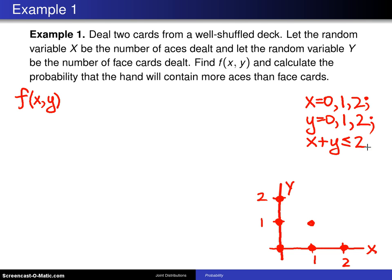That's one way to write the support. But now the hard part is to determine the probability mass function. There is no indication here that the order in which the cards are dealt is important, so there will be 52 choose two different deals possible. Now, in those 52 choose two different deals, we want to know out of the four aces, choose x.